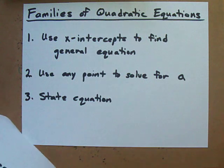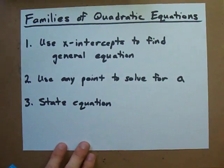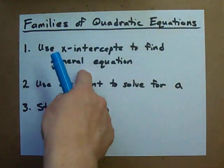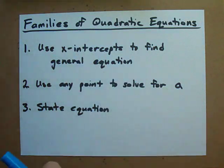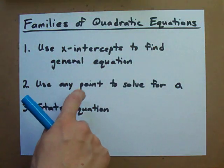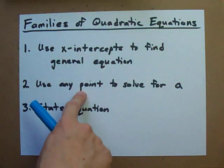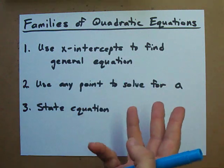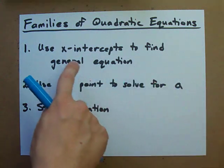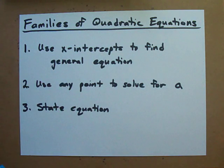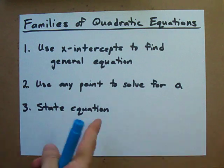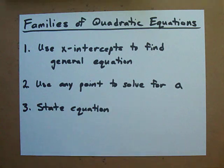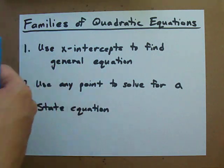To find the equation, you're going to use the x-intercepts to find a general equation. Then use the point that you're given to solve for a, which is something we're going to build into our general equation. Then all you have to do is restate your general equation but fill in your a.